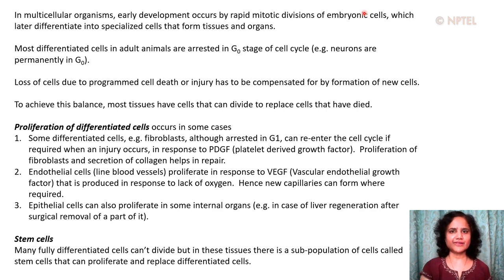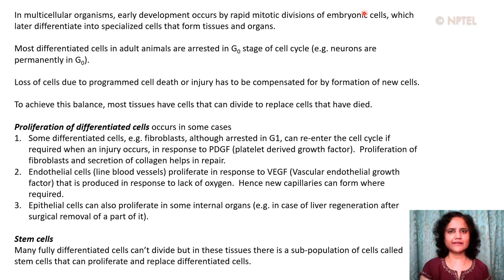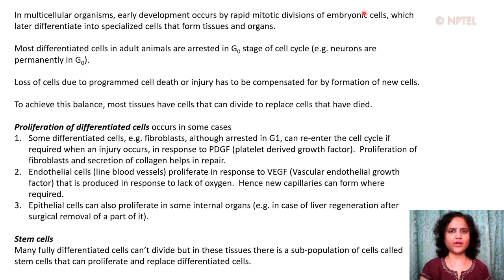In multicellular organisms, early development occurs by rapid mitotic divisions of embryonic cells, which later differentiate into specialized cells that form tissues and organs. Most differentiated cells in adult animals are arrested in the G0 stage of the cell cycle. For example, neurons remain arrested in the G0 stage of the cell cycle and don't come out of that.